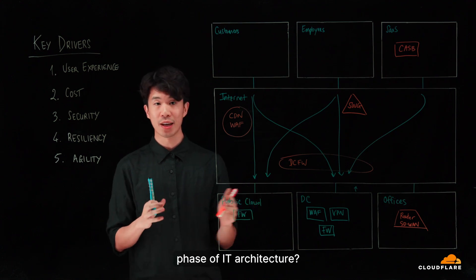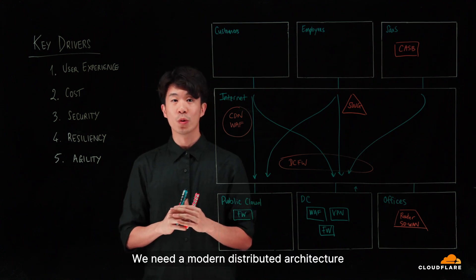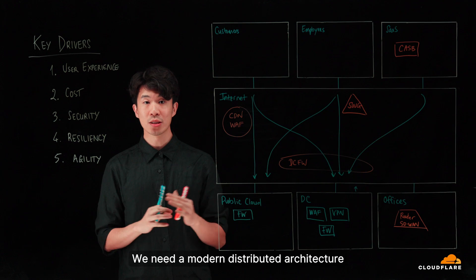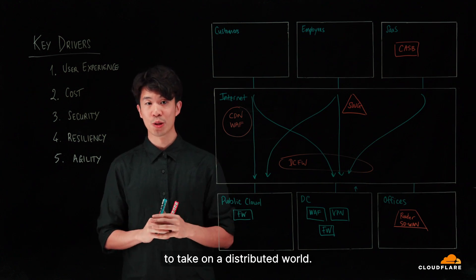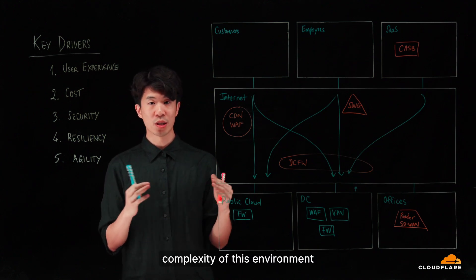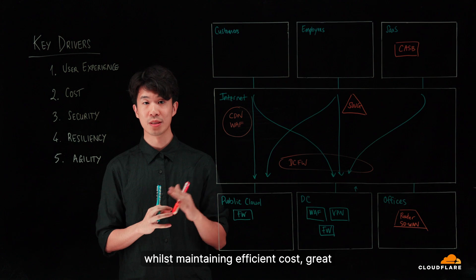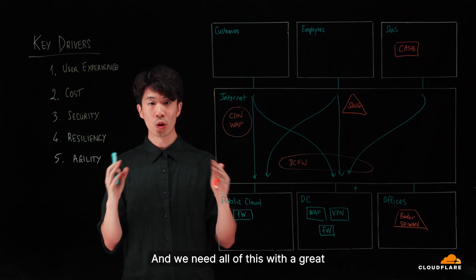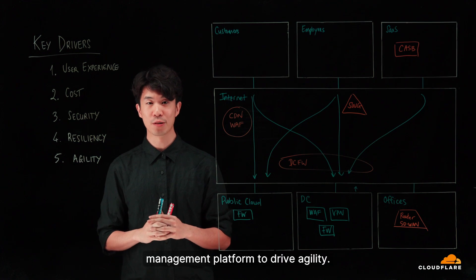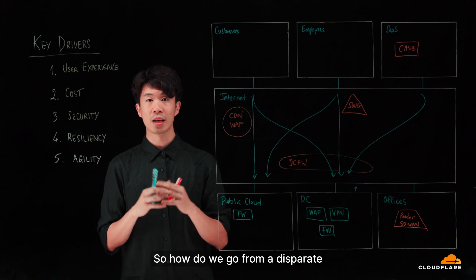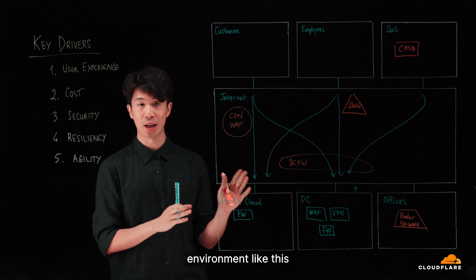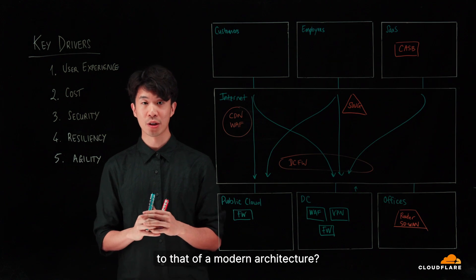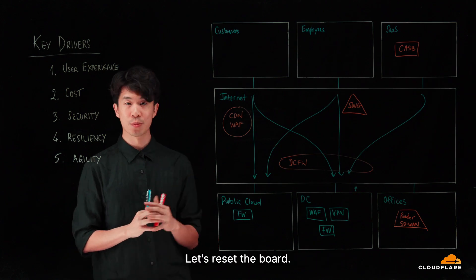So what is the next phase of IT architecture? We need a modern distributed architecture to take on a distributed world. We need to reduce complexity of this environment whilst maintaining efficient cost, great security and good resiliency. And we need all of this with a great management platform to drive agility. So how do we go from this spare environment like this to that of a modern architecture? Let's reset the board.